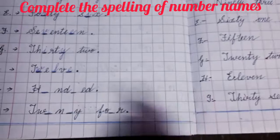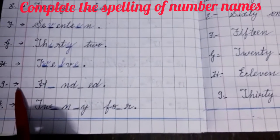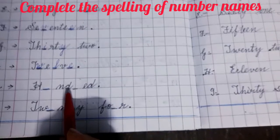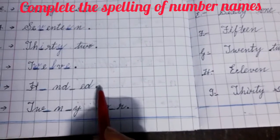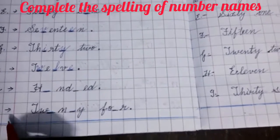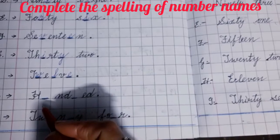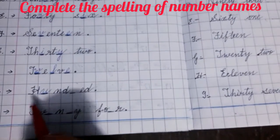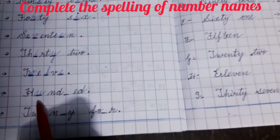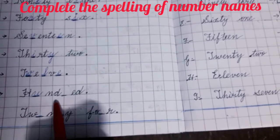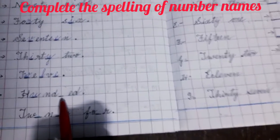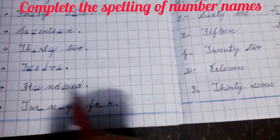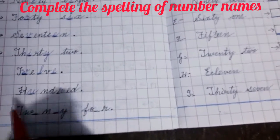Now leave one row and write I, put an arrow. Write H blank space N D blank space E D. In this blank space what you will fill? You will fill in U. H is already written, so you have filled in U. N D is already written, you will fill in R. O N E H U N D R E D — 100.